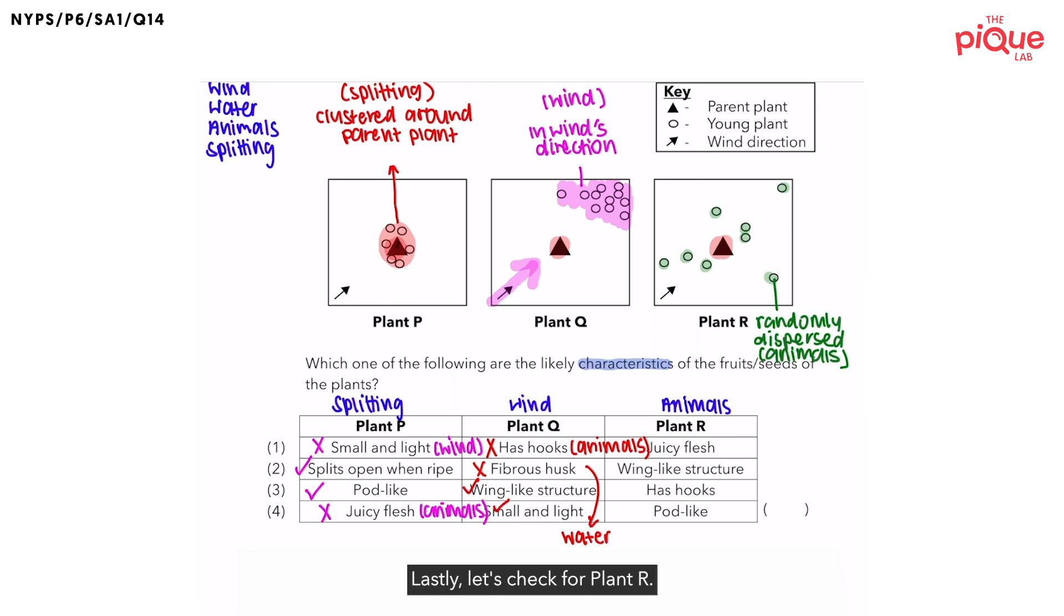Lastly, let's check for plant R. Since the fruits of plant R are dispersed by animals, what kind of characteristic does the fruits or seeds have? Would the fruits of plant R have a juicy flesh? Yes, the juicy flesh would attract the animals to eat the fruits. And during the process, when the animals eat the fruits, if the fruits have a small seed, the seeds will be swallowed and passed out together with the waste of the animals, further away from the parent plant.